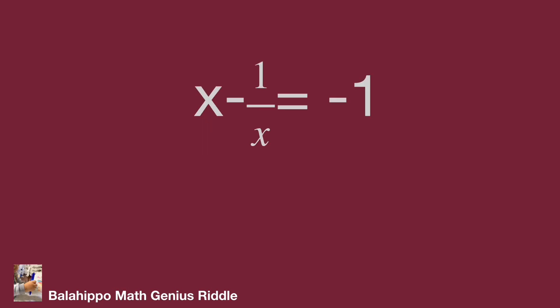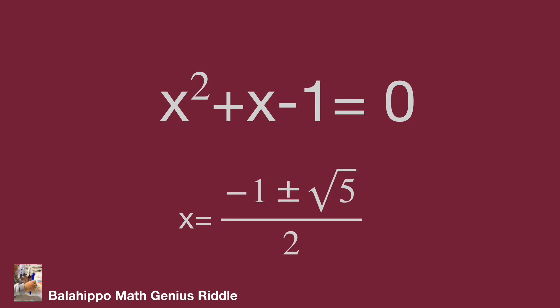When x minus 1 over x equals minus 1, get the quadratic equation as x squared plus x minus 1 equals 0. Then get x equals minus 1 plus or minus square root of 5 over 2.